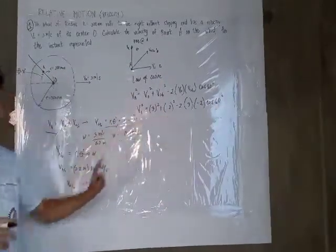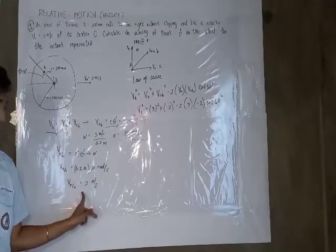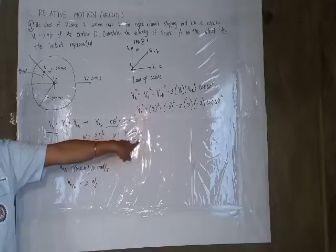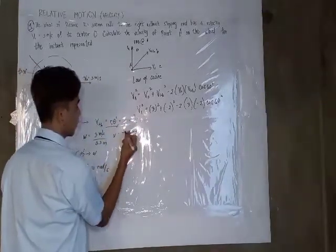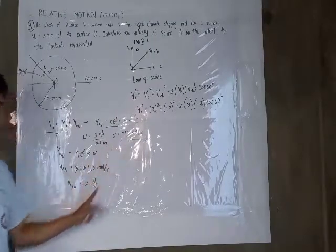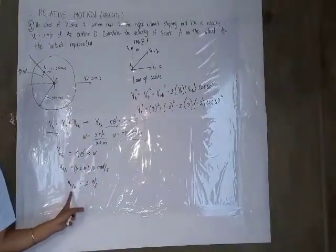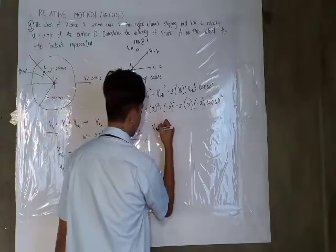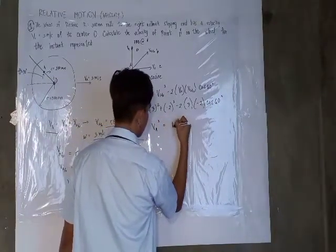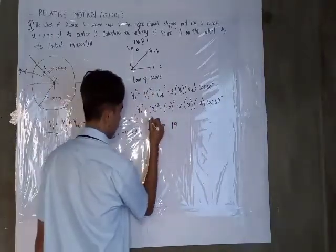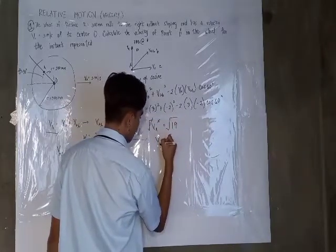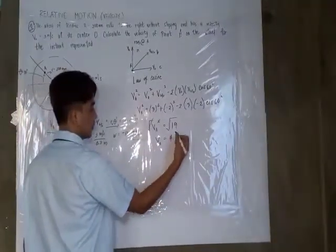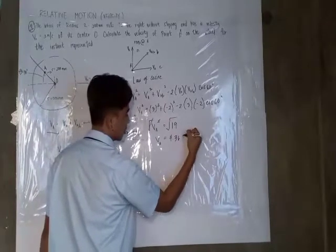You may wonder why the velocity of A relative to O is negative. Since the velocity of A relative to O equals 2 meters per second, the angular velocity becomes negative due to the right-hand rule (paper rule), meaning V_{A/O} is also negative. Solving, V_A equals the square root of the expression, giving V_A equals 4.36 meters per second.